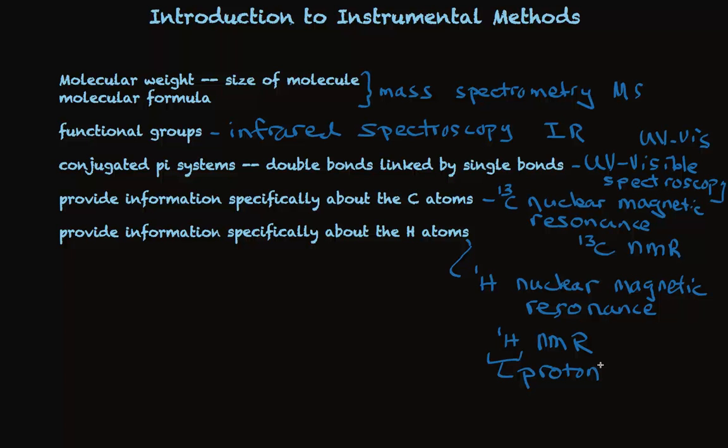So these techniques, pulled together, almost always let you determine what a structure is when you work hard enough at it. We're going to look at relatively simple applications of these things, and we are not going to look at the modern permutations that let you go into structure detail with much greater depth. But we'll take a look at each one of these, and let me point out one last thing for now, and that is that this set of techniques here are all spectroscopy.